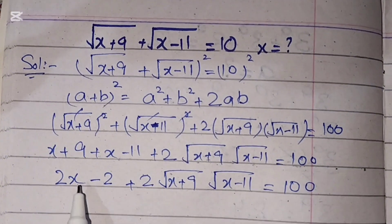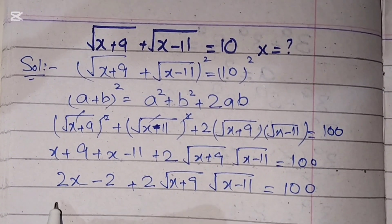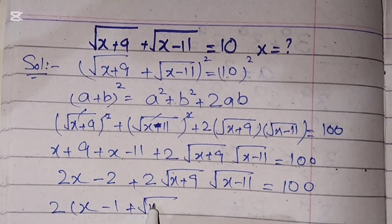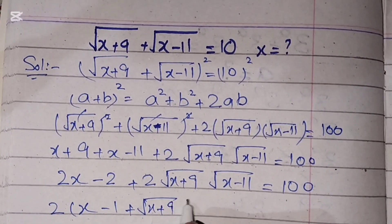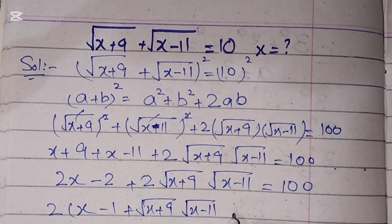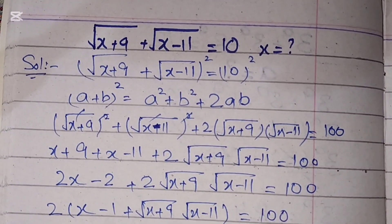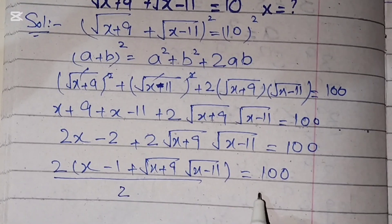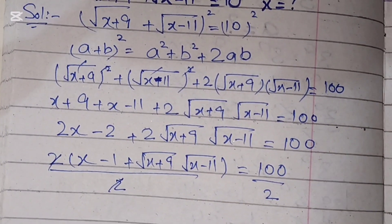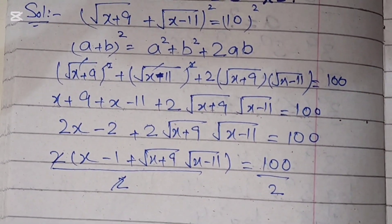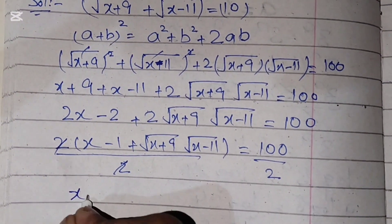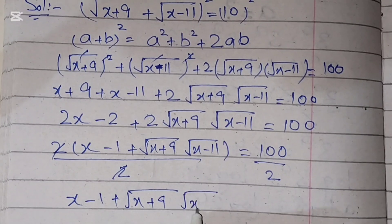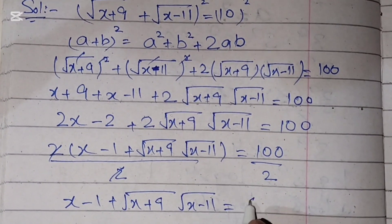Now we can take 2 common from these three terms. The 2 cancels with the 2, giving us: x - 1 + square root of (x + 9) times square root of (x - 11) equals 50.